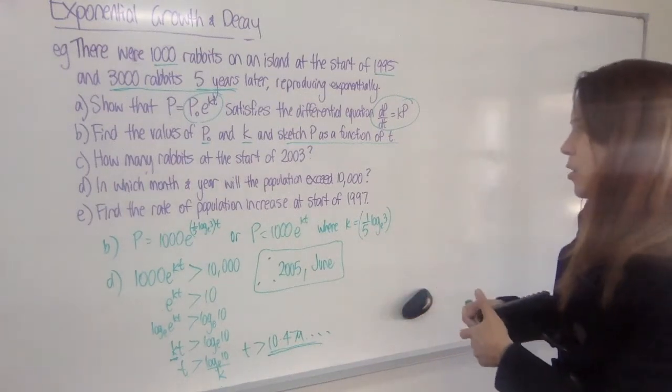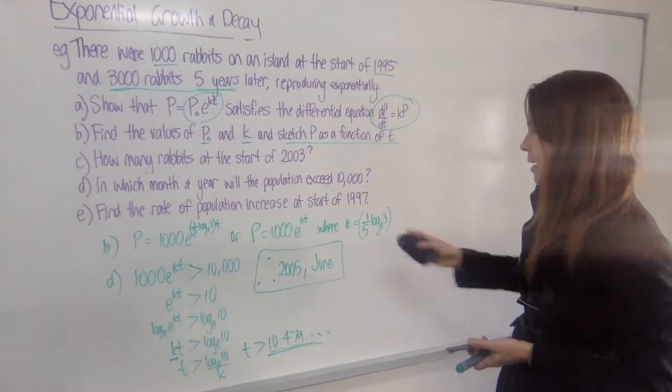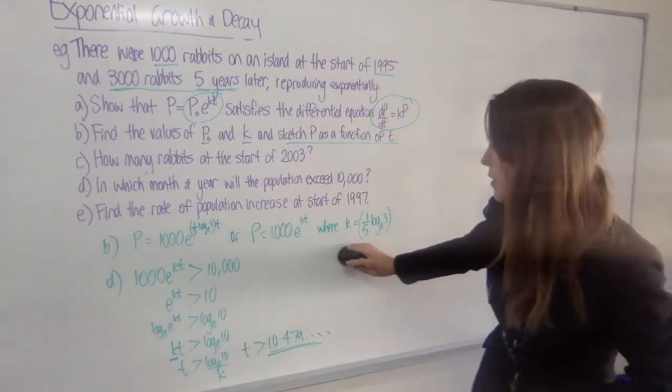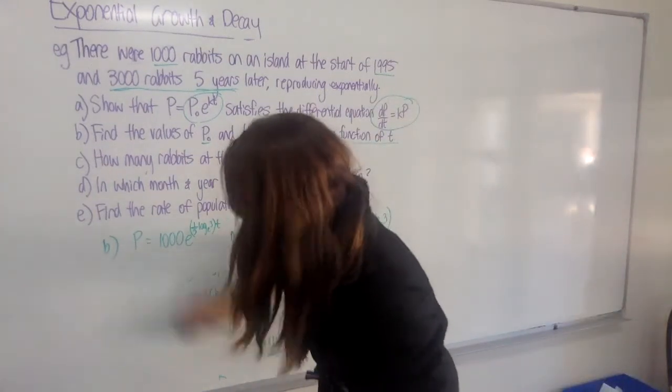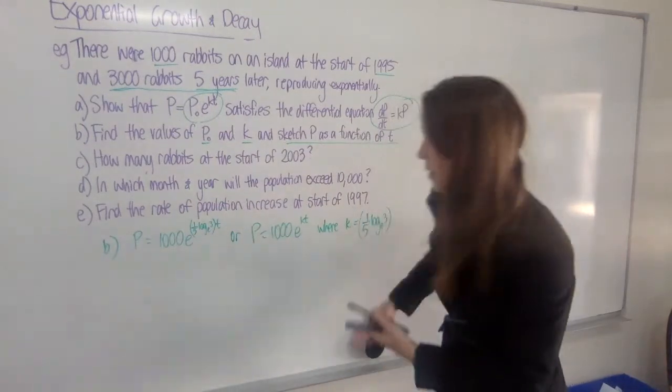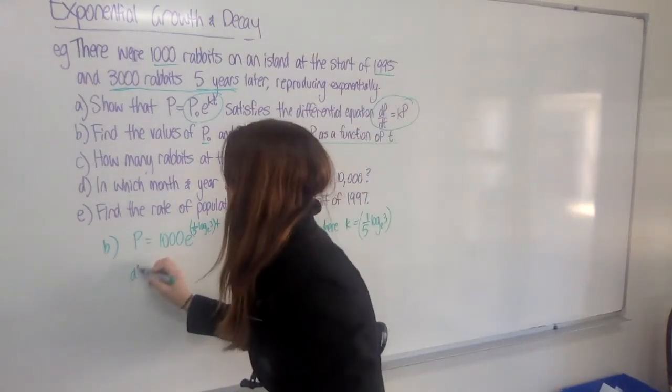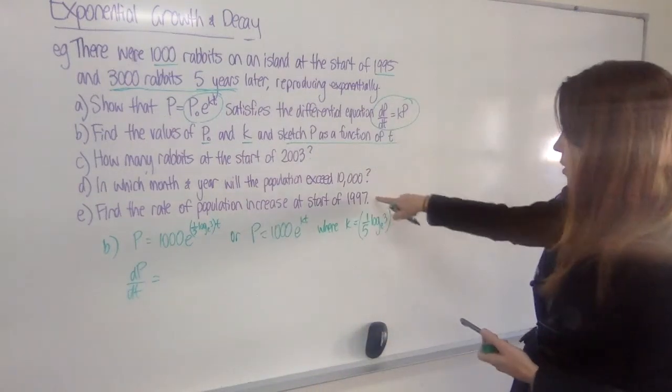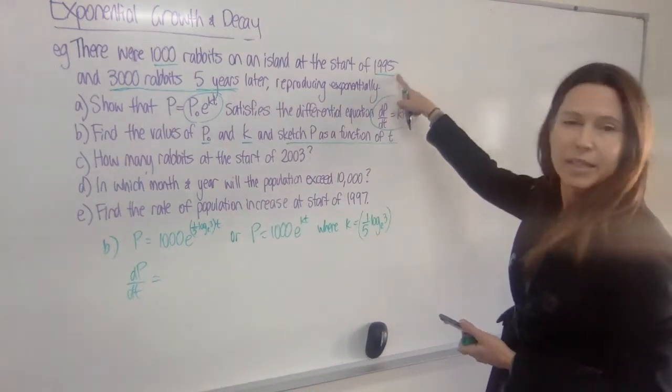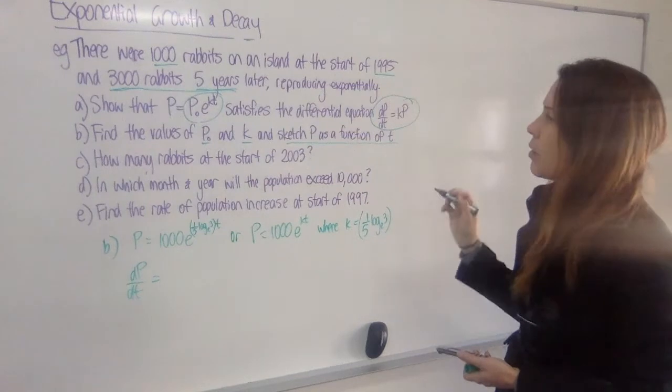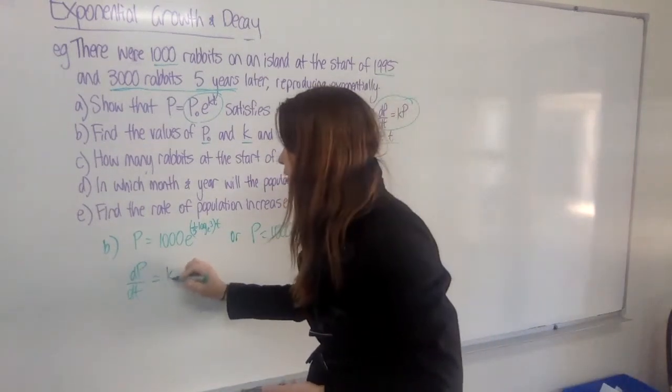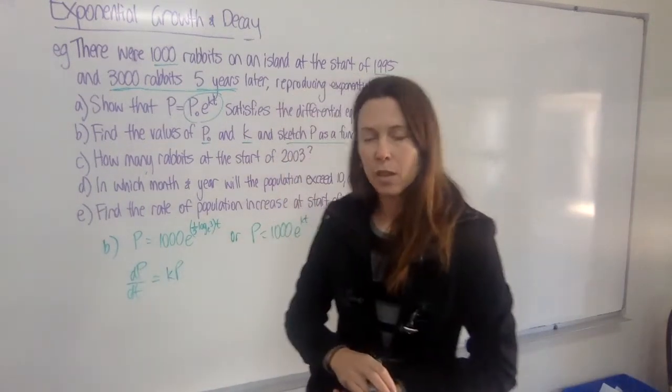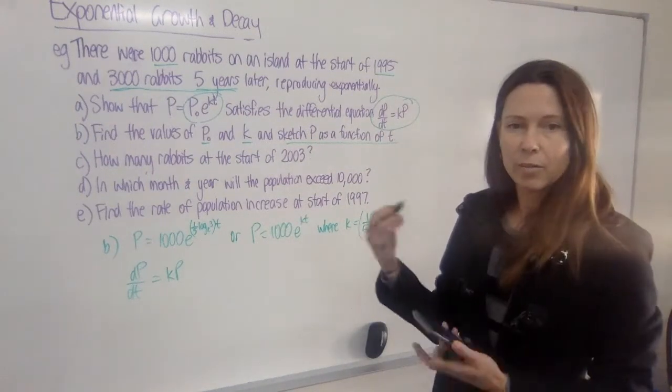Now for the last question, we need to find the rate of population increase at the start of 1997. Now don't forget that the rate, that is dP/dt. That's what we're looking for. And when are we looking for it? We're looking for it when t equals 2. Now we already know that dP/dt is going to be equal to kP. So we know what k is. We've got that.